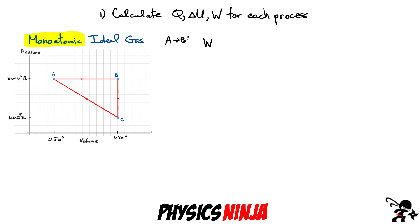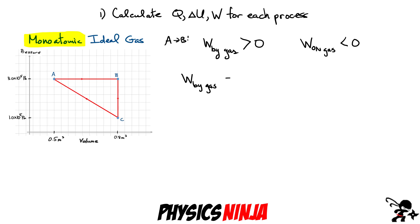How do we calculate the work? Since this is an expansion — the volume is getting bigger, going from 0.3 to 0.8 — the work done by the gas has to be greater than zero. The gas is pushing that piston to a larger volume. The work done on the gas would simply be the opposite sign. The work done by the gas is the area under the curve of the line going from A to B, which is just a rectangle.